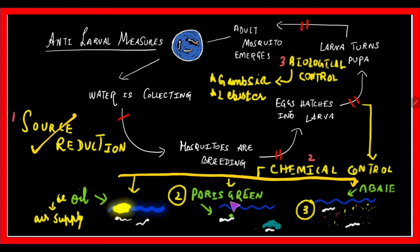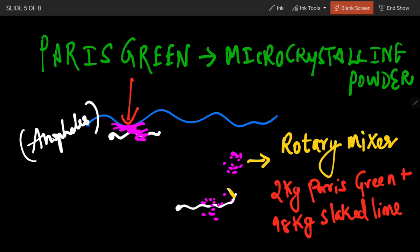Next is Paris green, or copper acetoarsenite, an emerald green microcrystalline powder. When sprayed on water, surface feeders like Anopheles larvae die first. For underwater larvae like Culex, a formulation called rotary mixer is used: 2 kg Paris green plus 98 kg of slaked lime or soapstone powder. The soapstone powder or slaked lime acts as a diluent, causing larvicidal action.